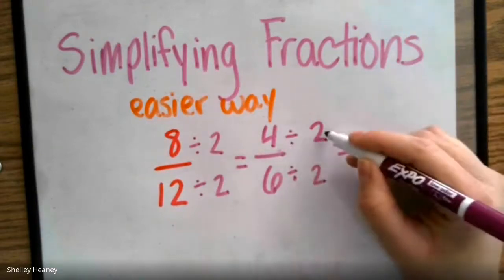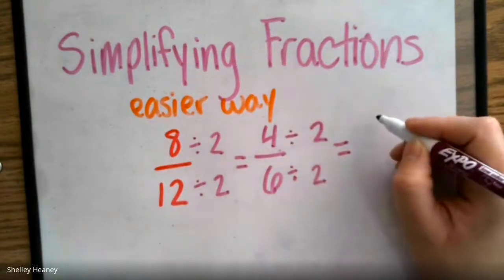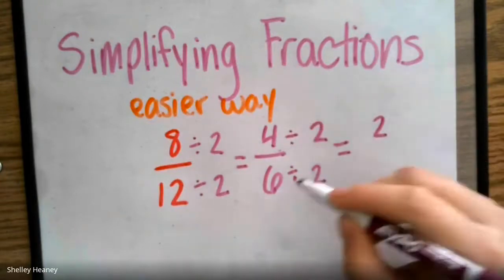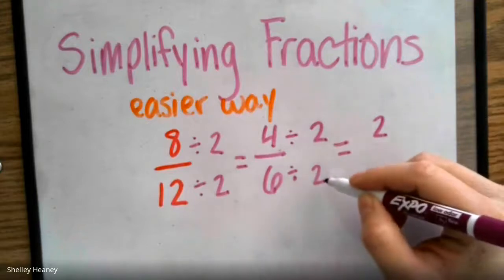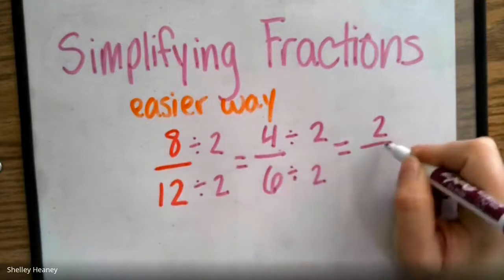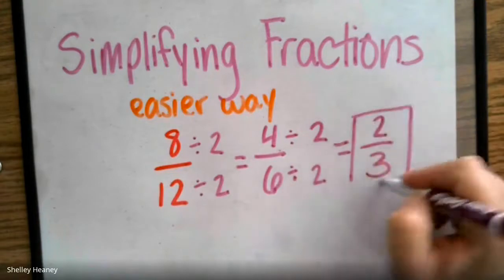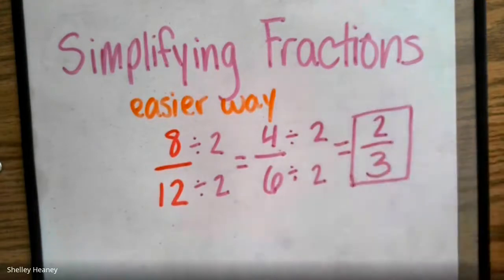What's 4 divided by 2? 4 divided by 2 is 2. What's 6 divided by 2? 6 divided by 2 is 3. 8 twelfths could be simplified into two-thirds.